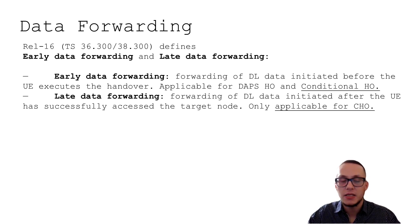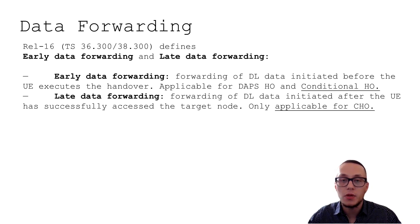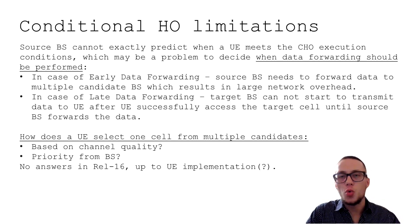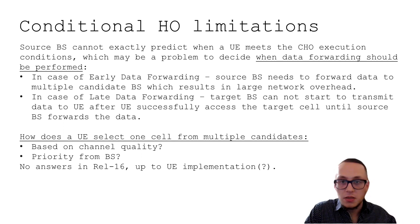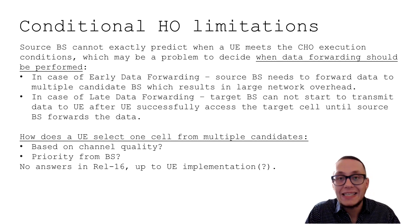The UE waits until the handover execution condition is met. User equipment may be configured with multiple potential candidates for conditional handover, but UE is allowed to make an attempt to only one cell at a time — there are no parallel random access attempts to other potential target cells. This is because allowing parallel attempts would increase the complexity of both user equipment and network. Regarding data forwarding in Release 16, there are two types: early data forwarding, where data transmission to the new cell is initiated before the UE executes the handover, which is good for latency; and late data forwarding, which is only applicable for conditional handover and occurs after the user equipment successfully accesses the target node.